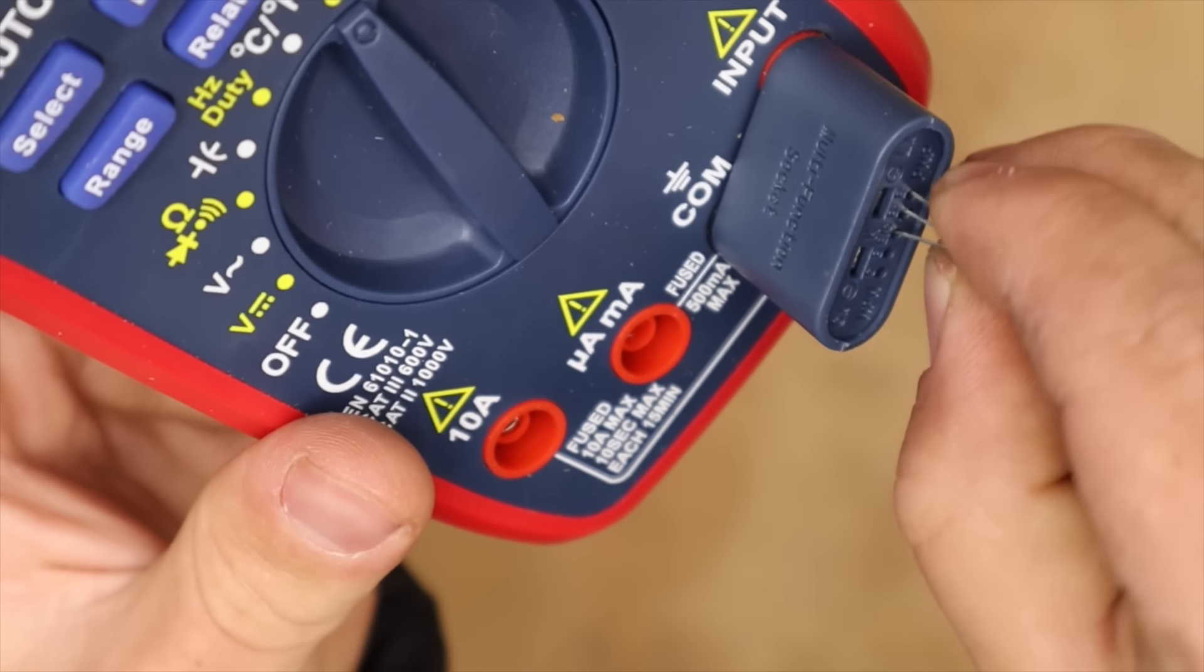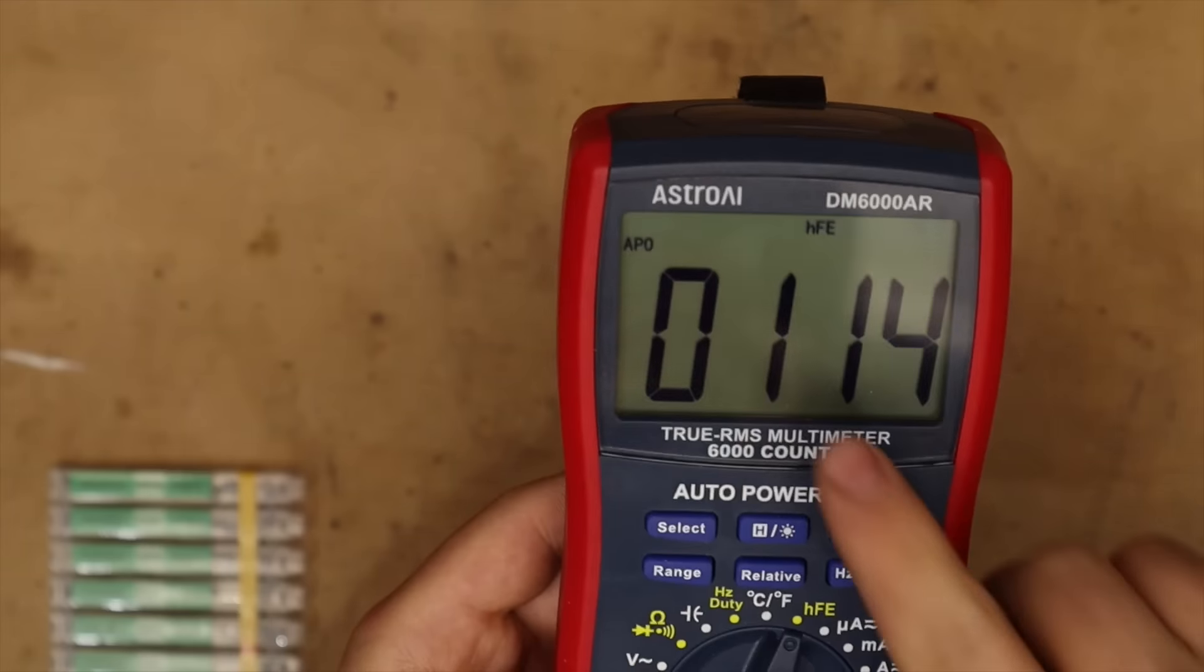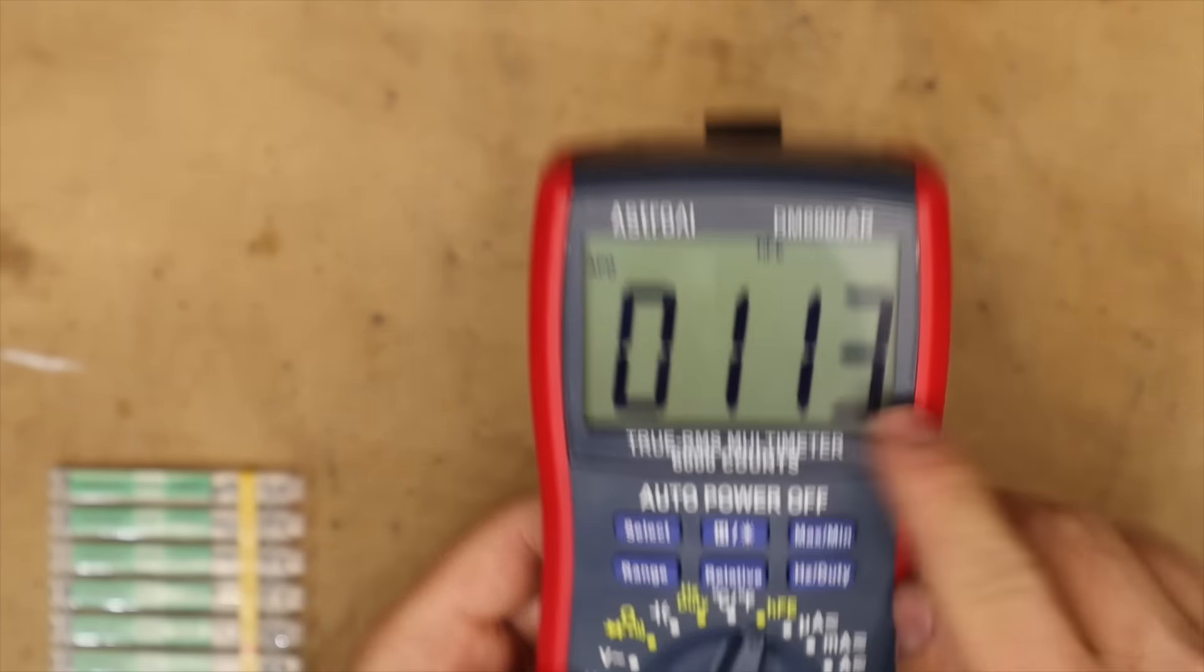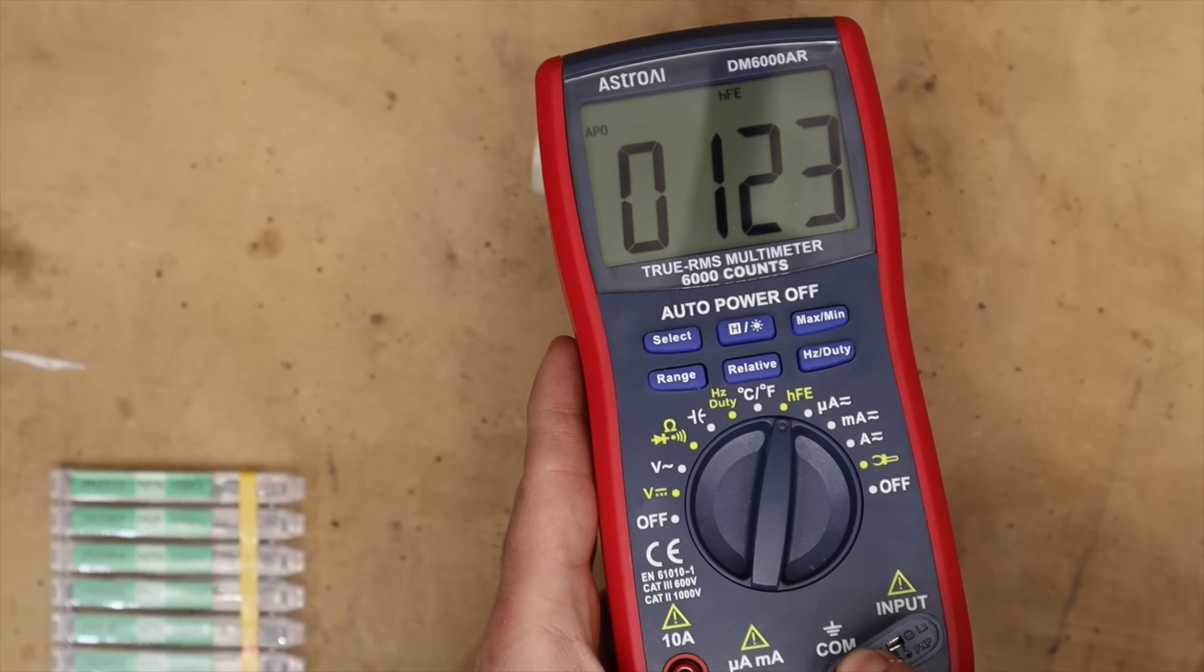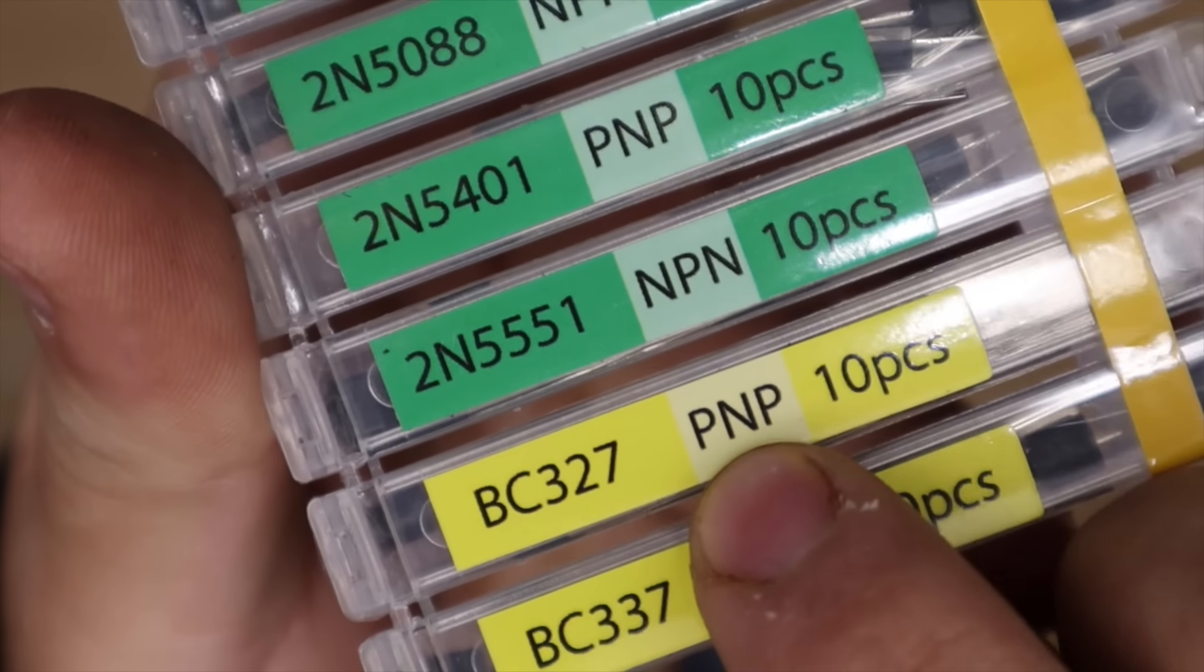We then align our transistor on the adapter and connect it to the board. This should give us a current gain which we can verify again on the data sheet. Clearly this is a bit more of a specialized and complicated feature but it's good to know it's there.